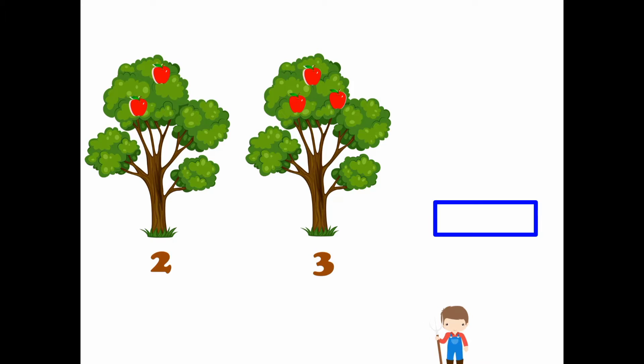So when I want to collect all apples together, it will make five apples. One, two, three, four, five. So two plus three equals five.